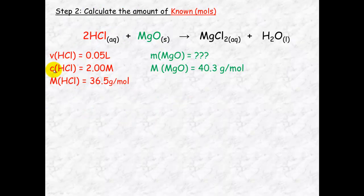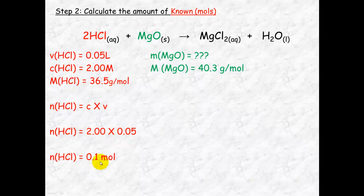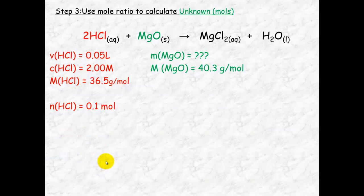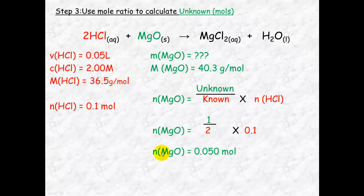So with this information here I've got a C, I've got a V. I can now work out my number of mole which is C times V, which will equal 0.1 mole. I now use this number of mole that I've just calculated. And I look at the mole ratio. 2 moles of hydrochloric acid reacts with 1 mole of magnesium oxide. So my mole ratio of unknown over known will be 1 over 2. So a half times 0.1 mole which I worked out before. So the number of mole of magnesium oxide equals 0.05 mole.